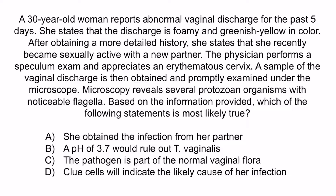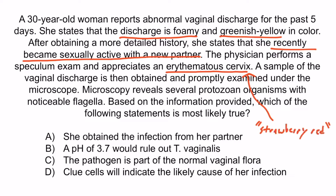From the question stem, this condition is consistent with Trichomonas vaginalis. Evidence includes the foamy — or frothy — discharge, the greenish-yellow color consistent with the yellow alcohol in the image, the new sexual partner, the erythematous cervix which may be described as strawberry red, and protozoan organisms with flagella on microscopy. The correct answer is A — she obtained the infection from her partner. Trichomonas vaginalis is an STI, and in the context of a new sexual partner, we can blame him.